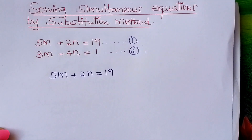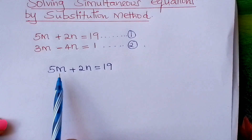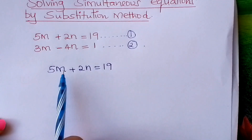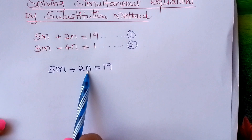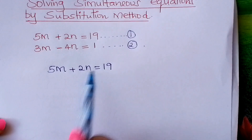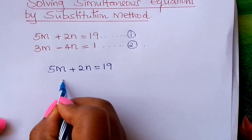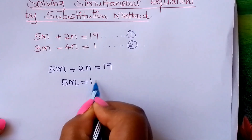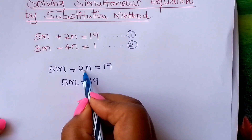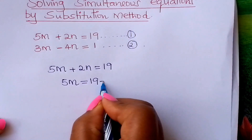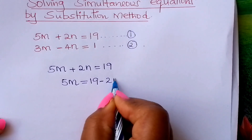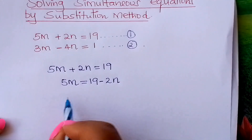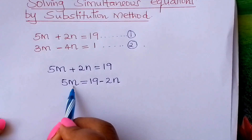We have picked the first equation. Now make either m or n the subject of the formula. Let us make m the subject. So, 5m will be equals to 19, and taking the positive 2n to the other side, it becomes minus 2n. Then make m the subject.